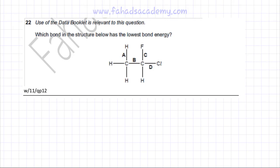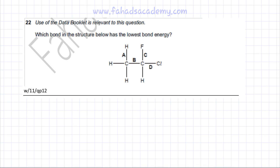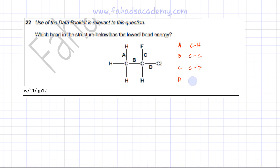The following chemical energetics question is related to bond energies and it's a slightly tricky question. The question states: which bond in the structure below has the lowest bond energy? You're given options A, B, C, and D — different bonds. A is the C-H bond, B is the C single bond C, C is the C-F bond, and D is the C-Cl bond.